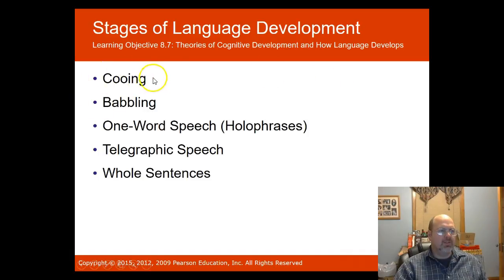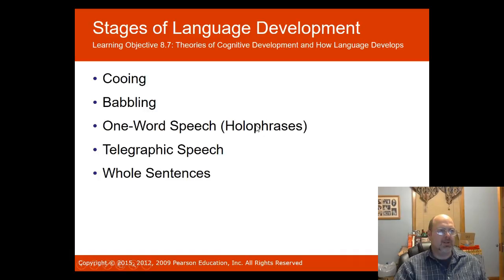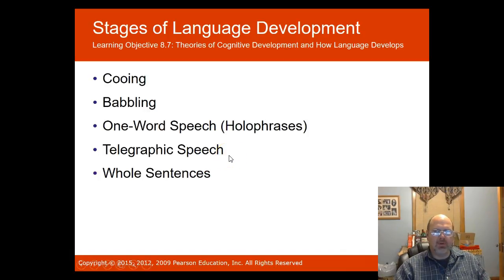Cooing is where babies are just making noises. Babbling is where they try to mimic what you're saying. One-word speech is where a child might say one word like 'milk,' meaning 'I want some milk.' Telegraphic speech is when they start adding more words together.